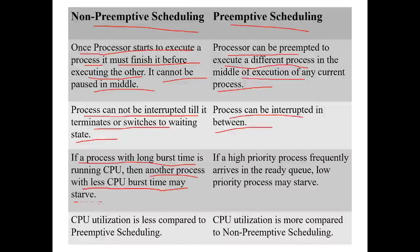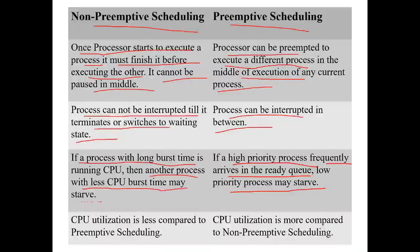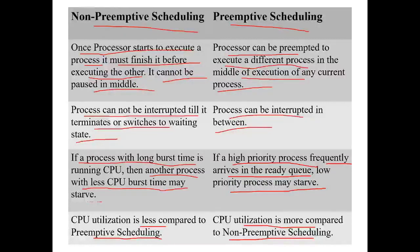Because of one long-running process, shorter processes have to keep waiting. In preemptive scheduling, if high-priority processes frequently arrive, low-priority processes may never get a chance to execute — that is the starvation problem. CPU utilization is less in non-preemptive scheduling compared to preemptive scheduling, where CPU utilization is higher. These are the differences between non-preemptive and preemptive scheduling, based on which scheduling algorithms are further classified.